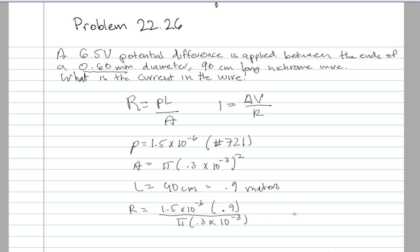Once we found R, we stick it in the final formula: I equals voltage over resistance. So I equals 6.5 divided by whatever we just calculated on the calculator.